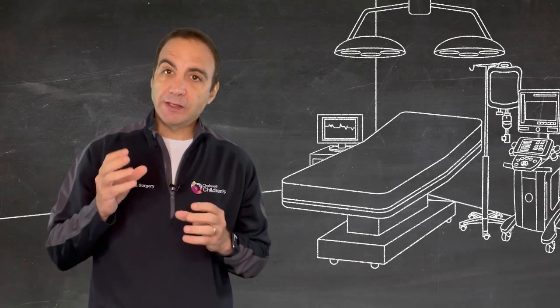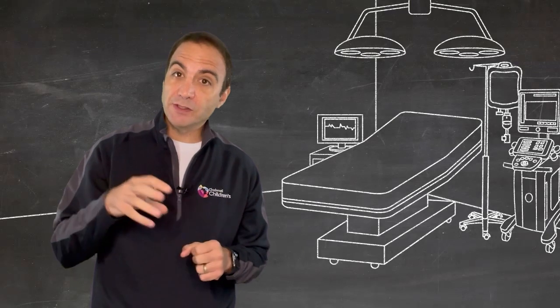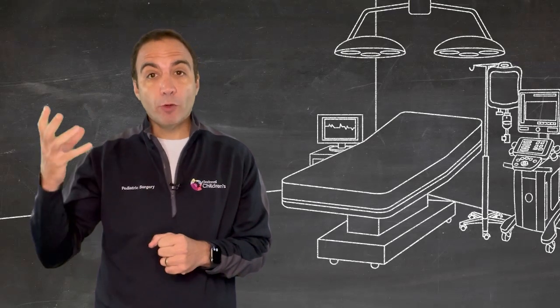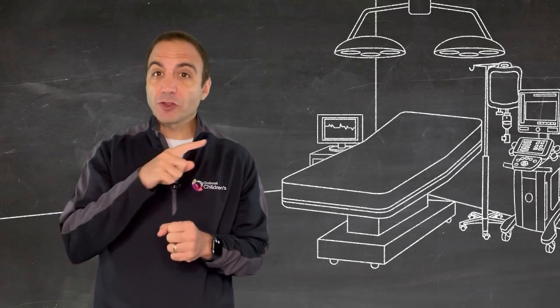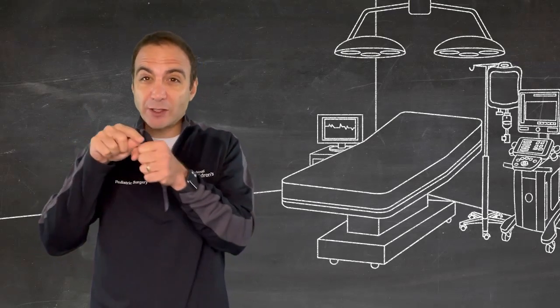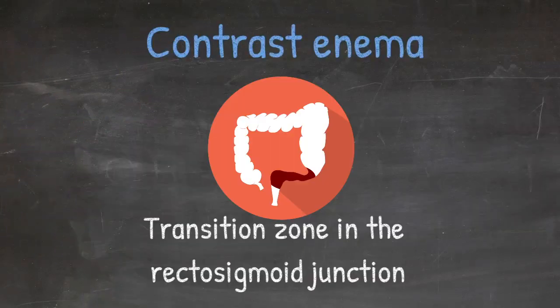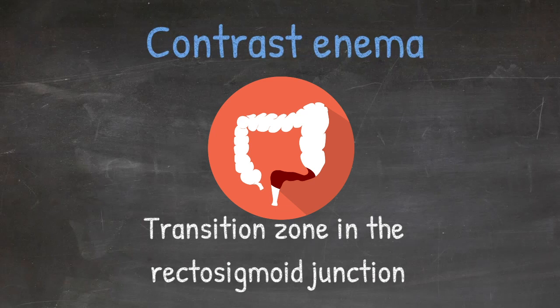Hold on a second, what does he mean when he says transition zone? Well, remember when Dr. Garrison explained that the nerve cells don't migrate down to the distal part of the rectum? Well, when that happens, it's contracted, and when there's normal nerve cells, it's not contracted. So the transition zone is from contracted rectum, and all of a sudden it opens up into dilated rectum. That's the transition zone.